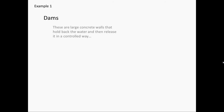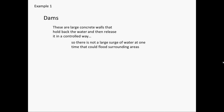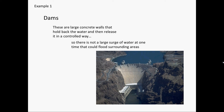An example of Hard Engineering is dams. These are large concrete walls that hold back the water and then release it in a controlled way, so there's not a large surge of water at one time that could flood surrounding areas. This is Hoover Dam in America — you've probably seen it. However, a disadvantage of big dams like this is that they have a large reservoir behind them that they flood, which is normally unwanted land.